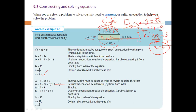The two lengths must be equal, so construct an equation by writing one length equal to the other. The first step is to expand the brackets. Use inverse operations to solve the equation — start by subtracting 9 from both sides, then simplify. Divide 15 by 3 to work out the value of x: x equals 5.